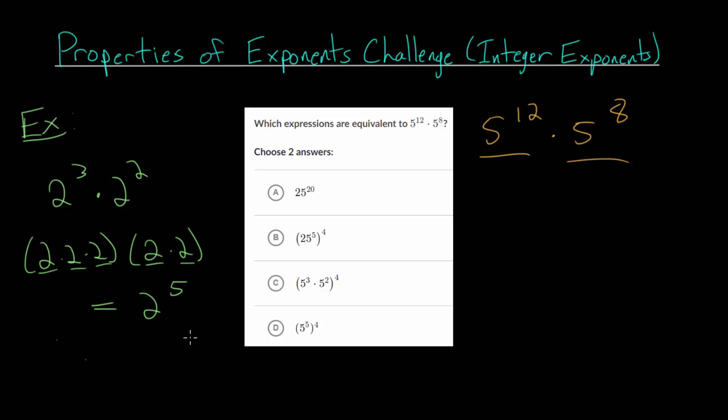We can generalize this property. It is true that when you have x to the a multiplied by x to the b, when the base is the same and you're multiplying, you're going to add the exponents. So in our example, we had 2 to the 3 plus 2, which is 2 to the 5th.